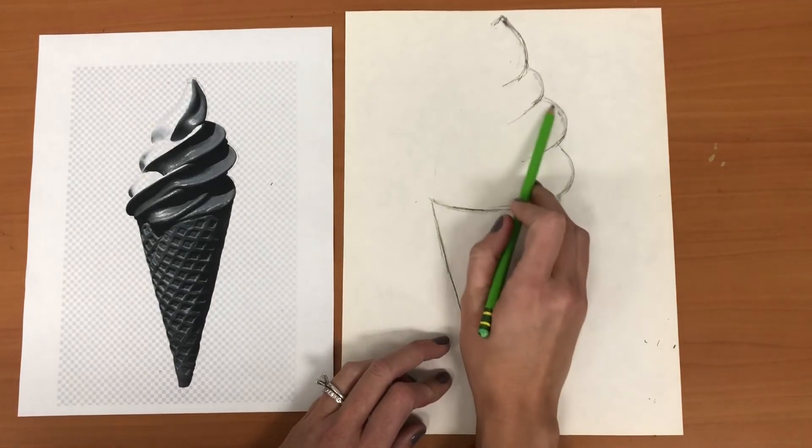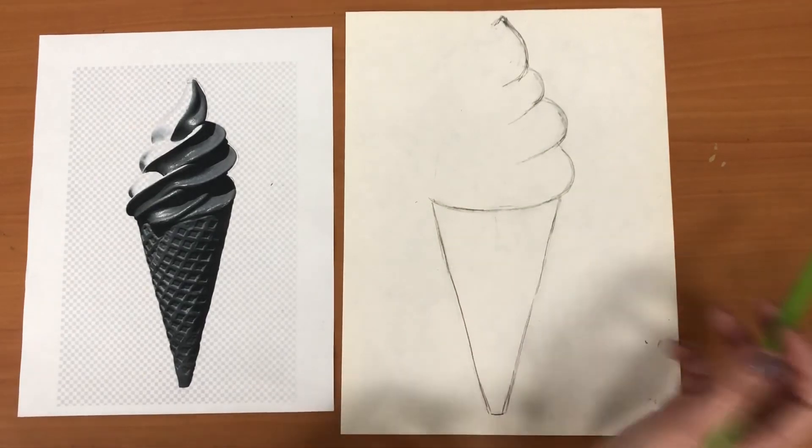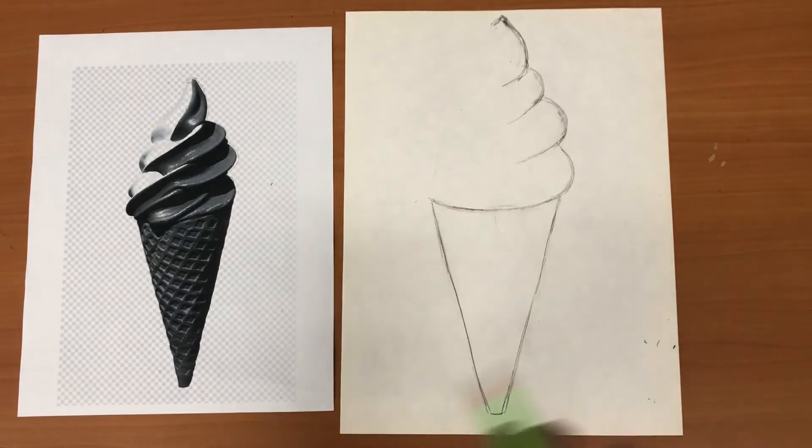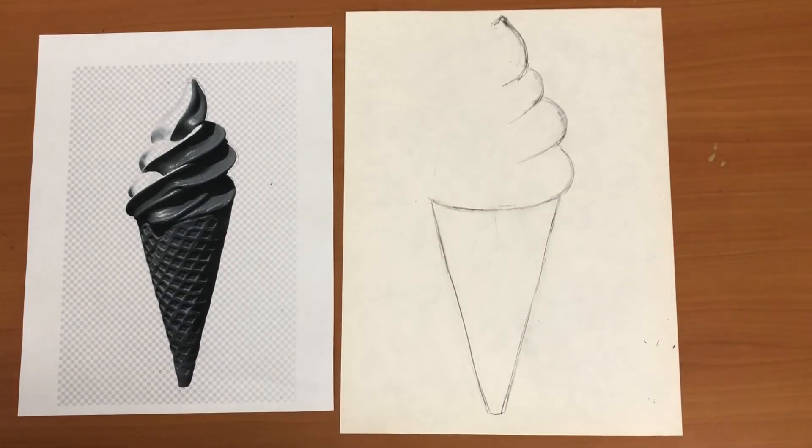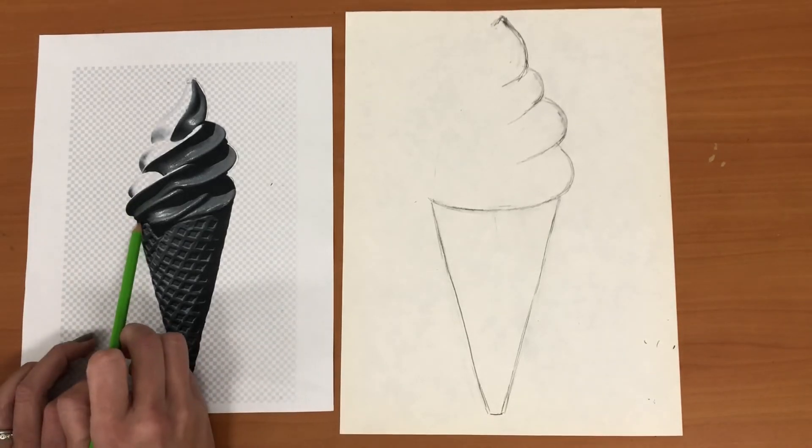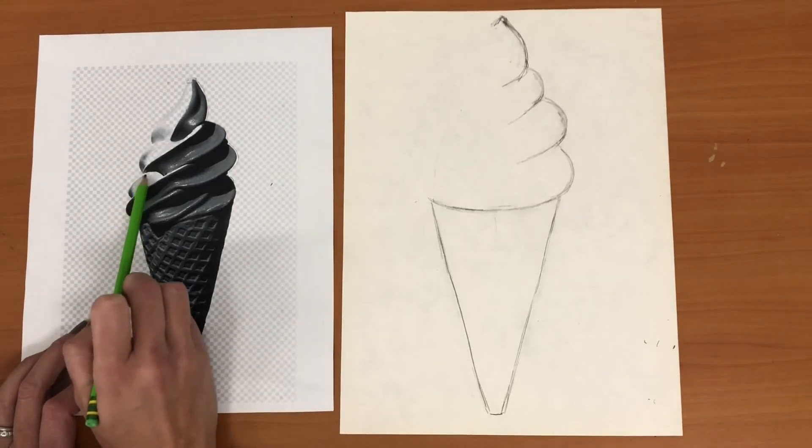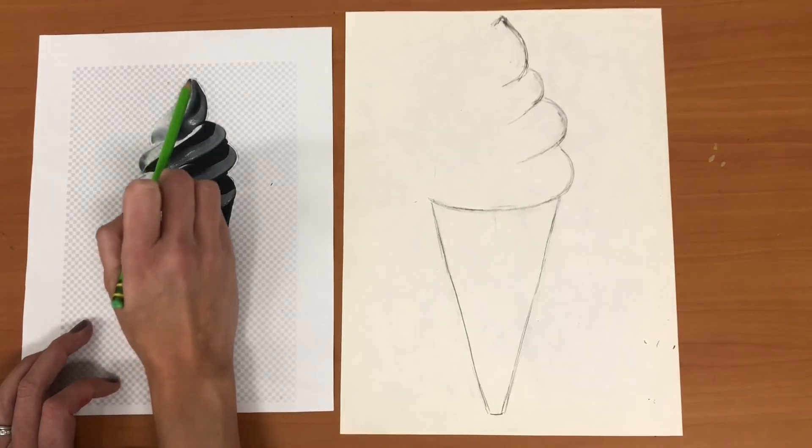So you're gonna adjust so that you have three pieces coming out on that side. Okay and then we're gonna do one more step here we're gonna look on the left. Okay where we have one, two, three and then up to that piece.